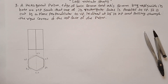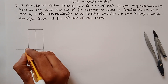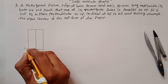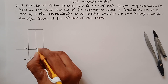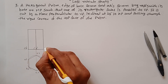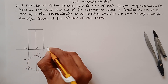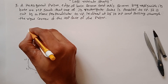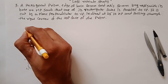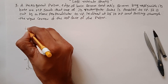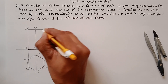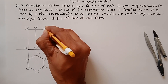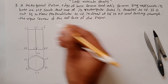Now add labeling to the front view. The top edge points are labeled a', b', and the sides are c', f', d', e'. The bottom edge points are labeled 1', 2', 3', 6', and 4', 5'.